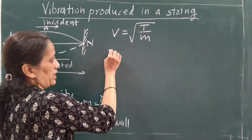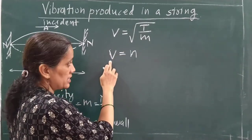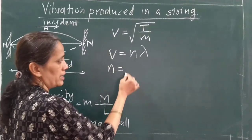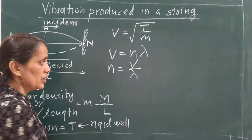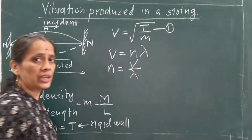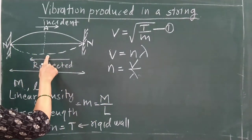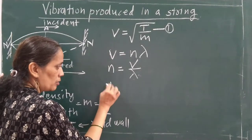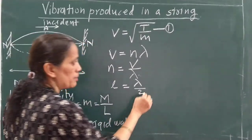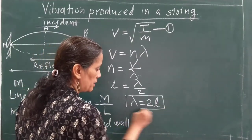The velocity of the wave can also be written in terms of frequency as V = n × λ. Therefore, frequency n = V/λ. This gives us the value of frequency from equation 1. Now in the first mode of vibration, along the length of the string l, one loop is formed. One loop means the length of one loop is λ/2. Therefore λ = 2l. This is equation number 2.